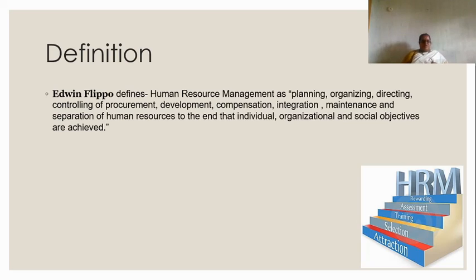Definition — Edwin Flippo. There are three definitions. Human Resource Management is defined as planning, organizing, directing, and controlling of procurement.